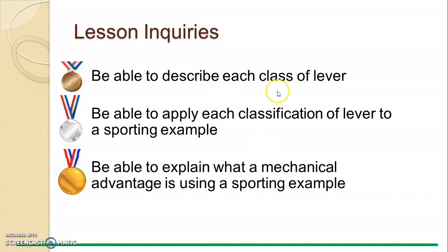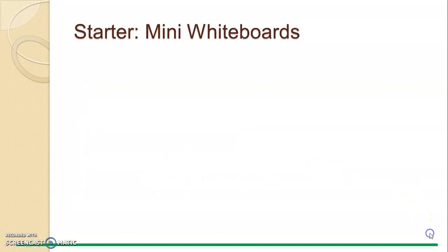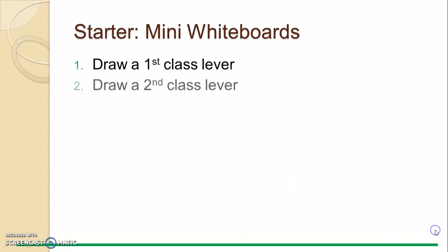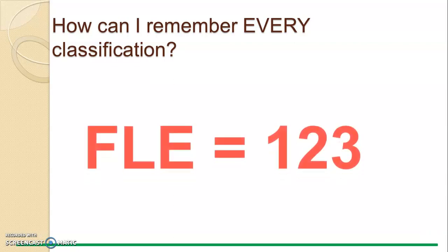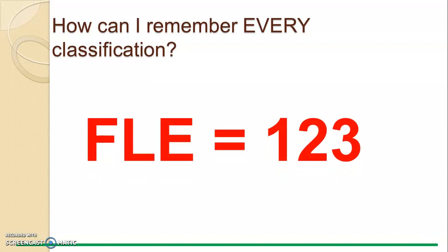The inquiry requires you to describe each classification of lever, apply them to sporting examples and within the body, and explain what mechanical advantage is. There are three classifications of lever. The best way to remember them is: FLE equals one, two, three. That little phrase helps you remember how each lever is laid out.